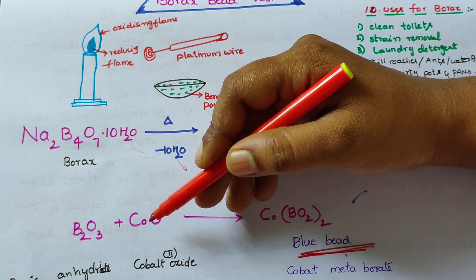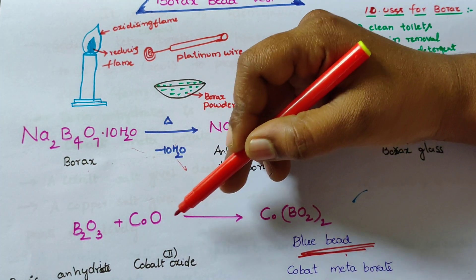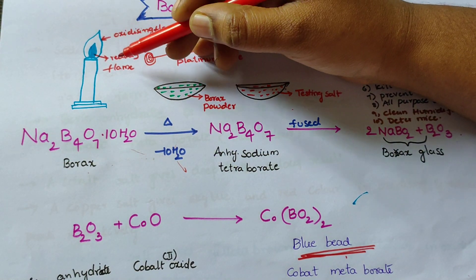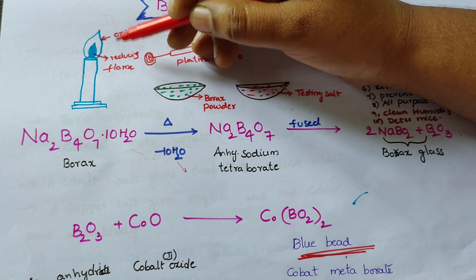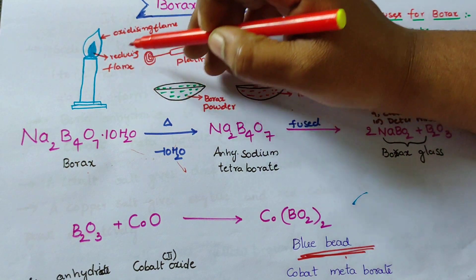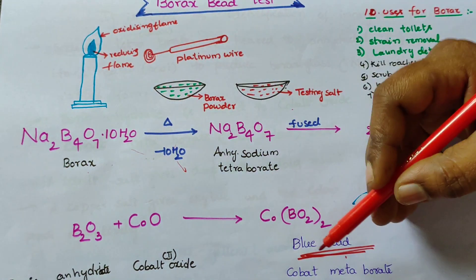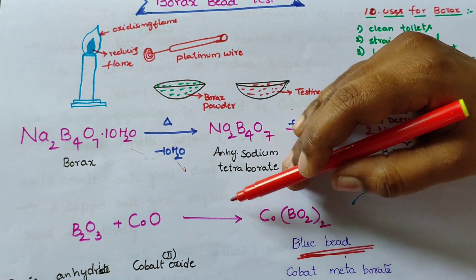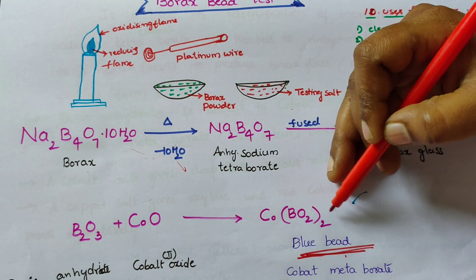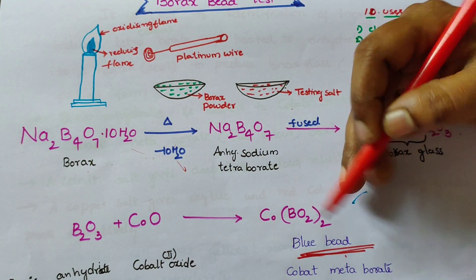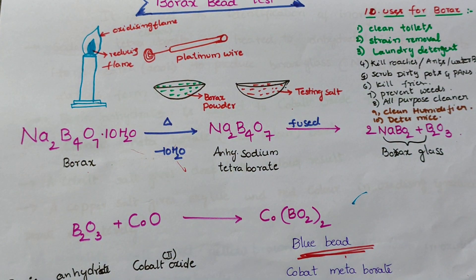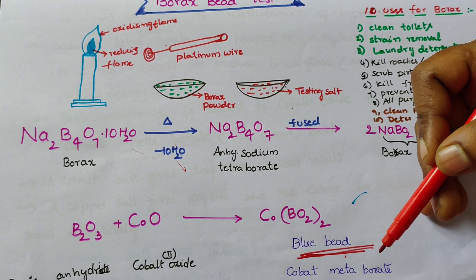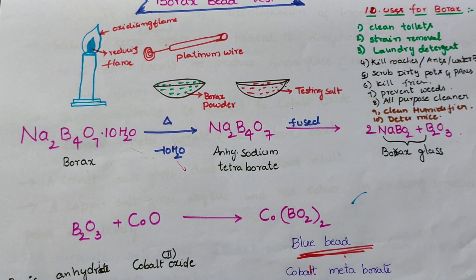When B2O3 reacts with CoO (cobalt oxide), it forms a blue color bead observed in both the oxidizing flame and reducing flame. The reaction produces Co(BO2)2, which we call cobalt metaborate. A blue color bead is observed in the platinum wire loop.